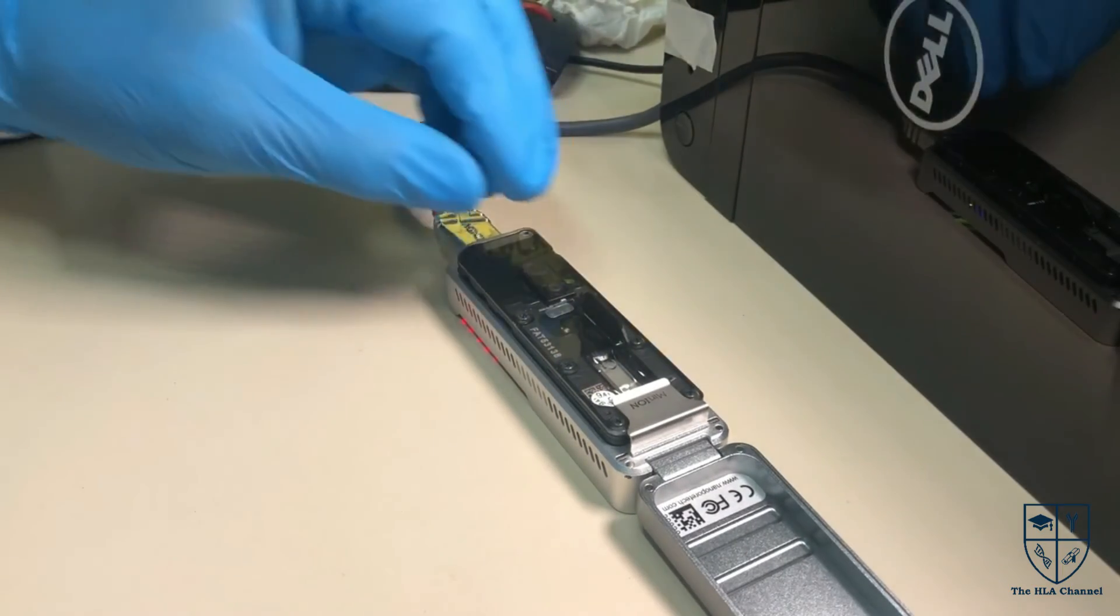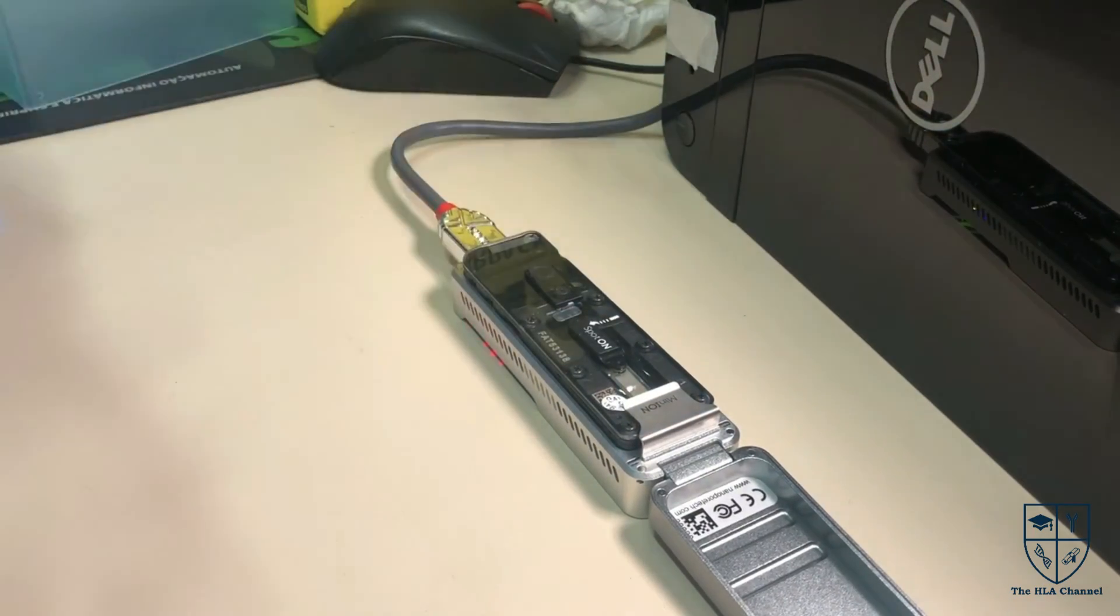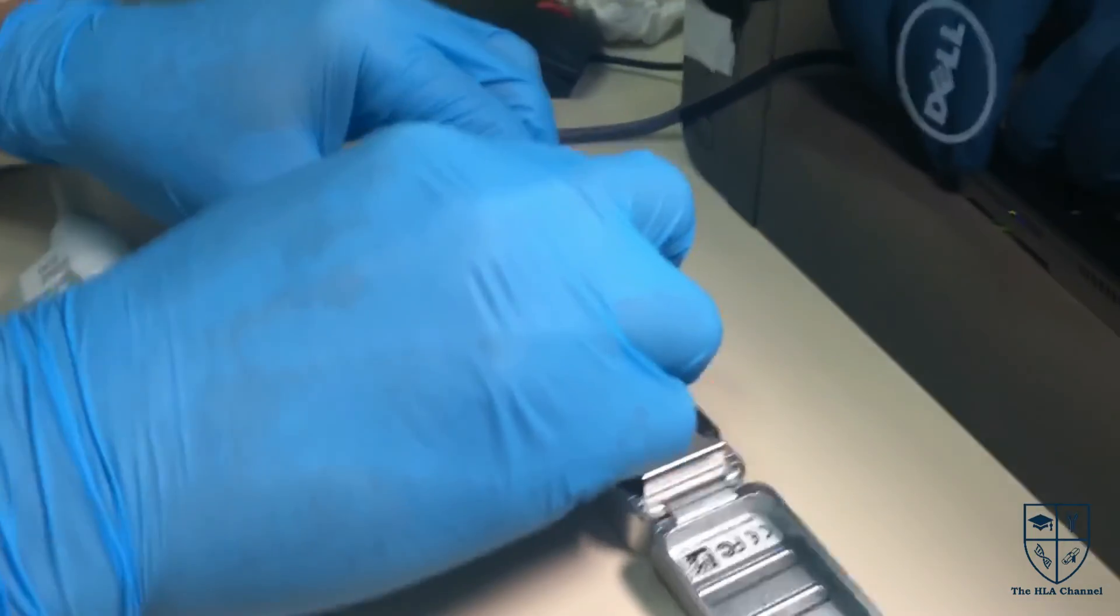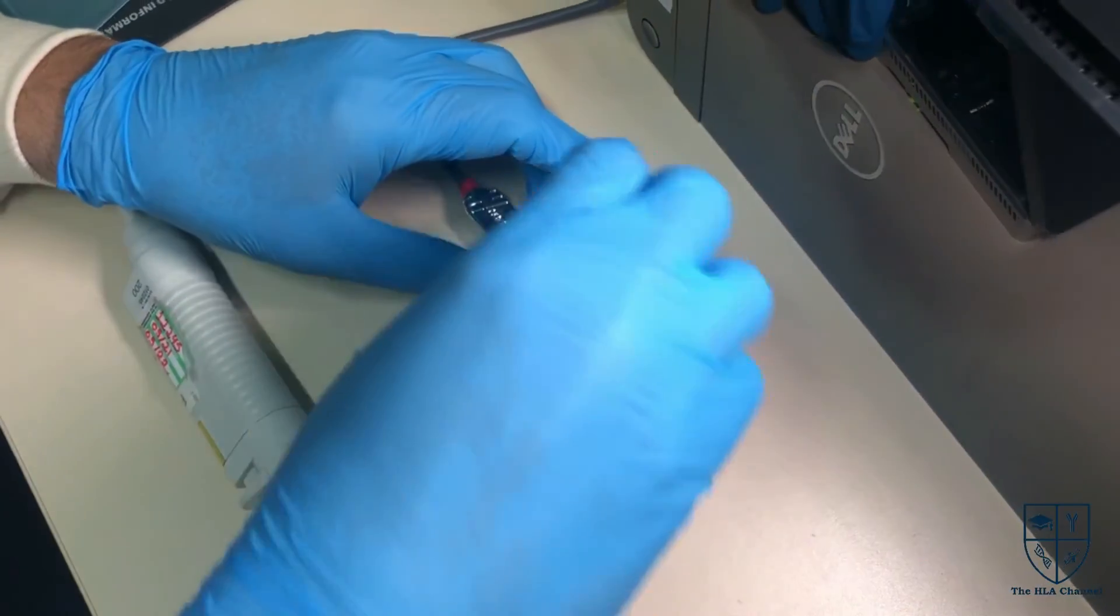Gently replace the spot-on sample port cover, making sure the bung enters the spot-on port. Close the priming port and close the MinION lid. Your library is ready to be sequenced. Start the run in MIN-NO software.